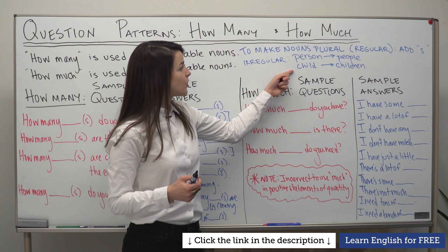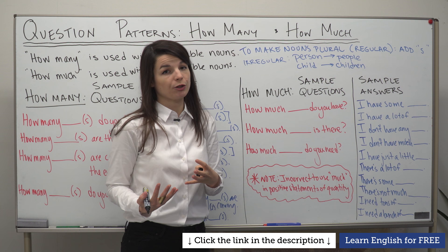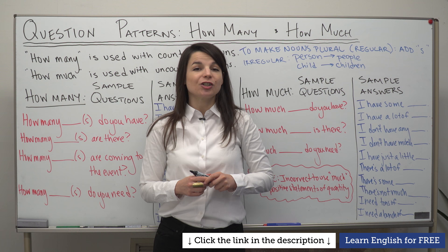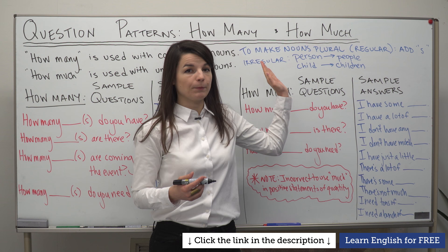Another irregular noun is 'child'. We say one child, but the plural form is 'children'. So two children, three children, a lot of children. Of course we can say 'kids', but that's just a different word. When you use the word 'child', please remember to use 'children' as the plural form. We'll use these in sentences with 'how many', because they're countable nouns.